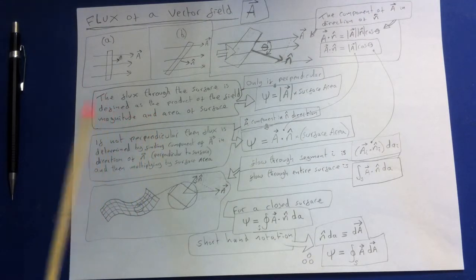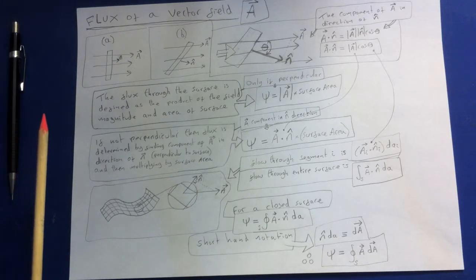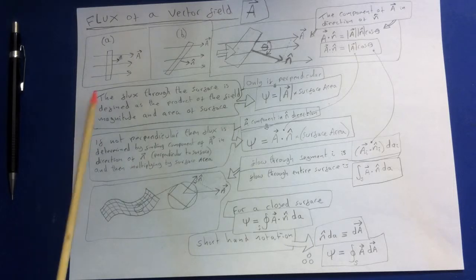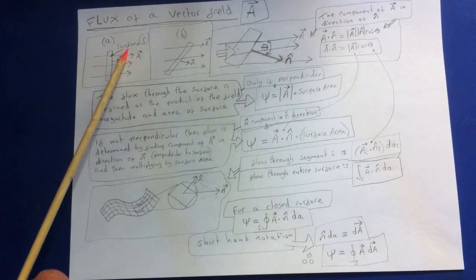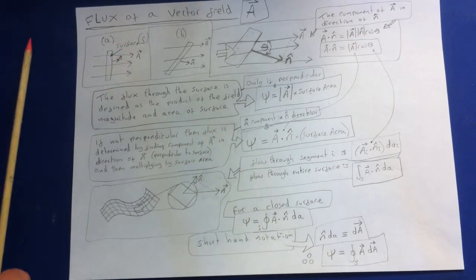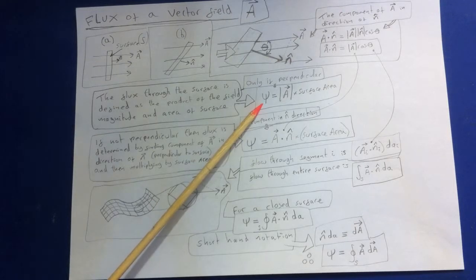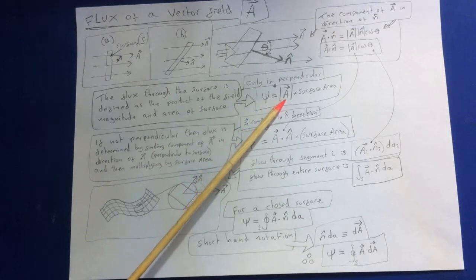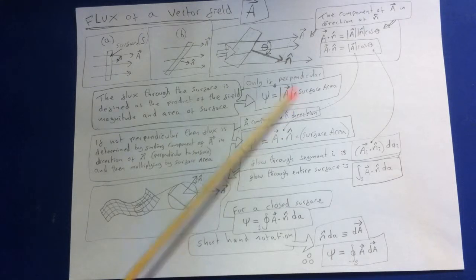You can think of the flux of a vector field over a surface as the amount of that field that flows through the surface, as shown in diagram A. In the simplest case of a uniform vector field A and surface S perpendicular to the direction of the field, the flux is defined as the product of the field magnitude and the area of the surface. So we've got the magnitude of the field times the surface area. This case is shown in A.